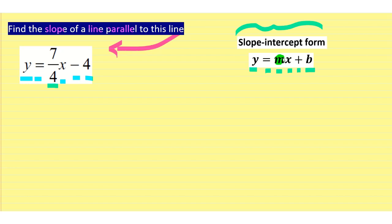So that means the slope of this line is 7 fourths.